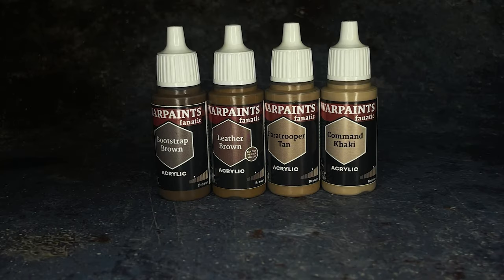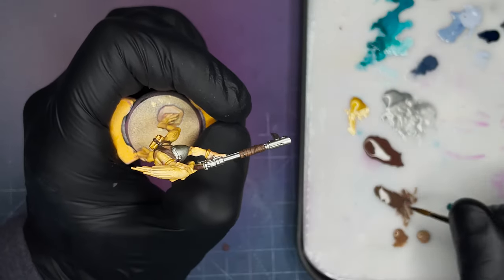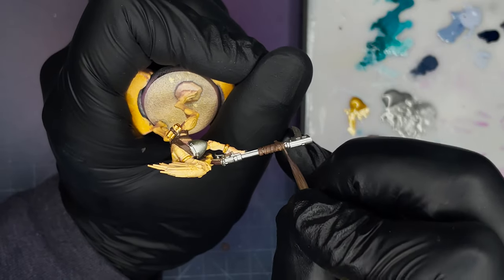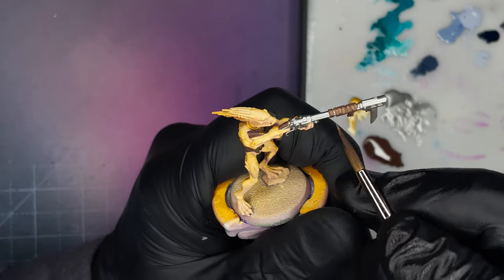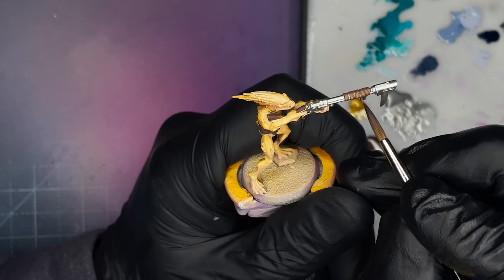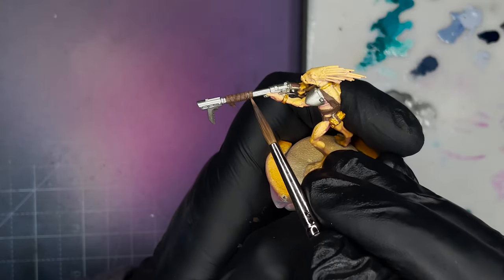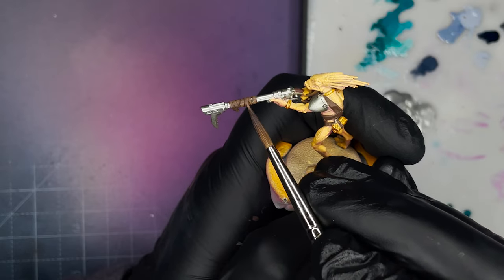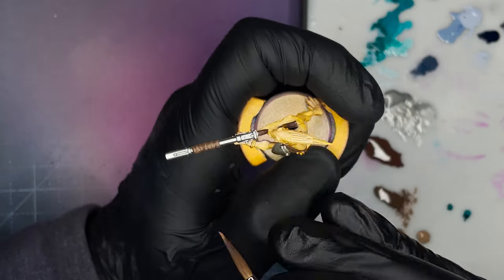For all of the leather body straps and any of the straps that are on the guns, I painted using the Army Painter brown triad. I just used these colors to base coat in the darkest color in the triad and then worked my way up using basic layering, covering a smaller surface area, then finishing up on the lightest color. That's another reason why I love this new Army Painter paint range - it just really makes color choices so simple.